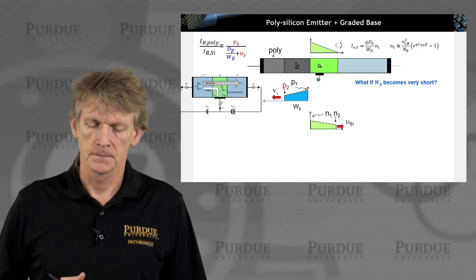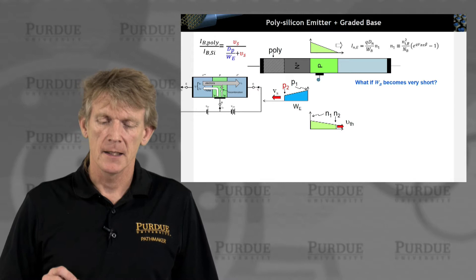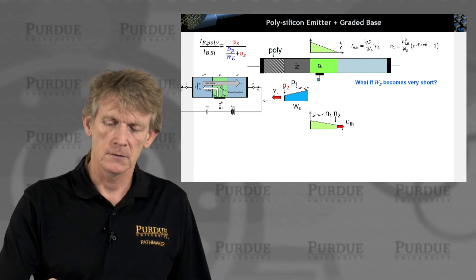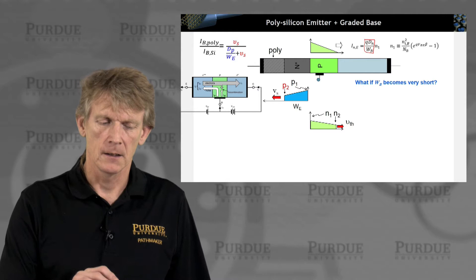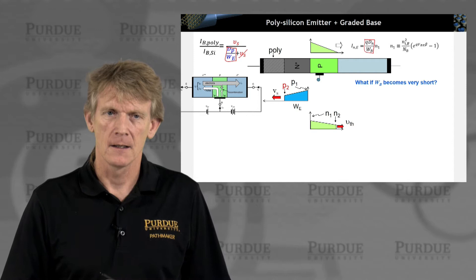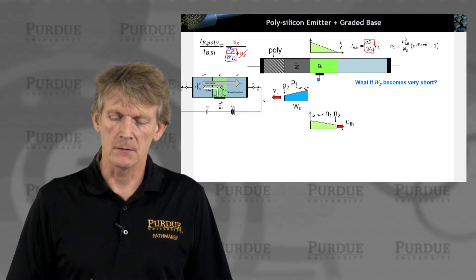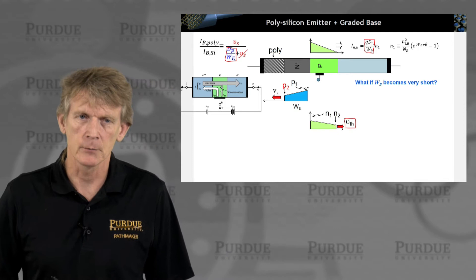And we're starting now to look at grading the base and looking at effects of the base. So what if the base becomes really short? Then I have something similar to what I had shown here for the emitter side. So if the base comes really short, you have again these terms similar to what we had on this side here, where we assume that this surface velocity is smaller than the diffusion velocity in the emitter. We have something similar. We have effectively a diffusion velocity here in the base.